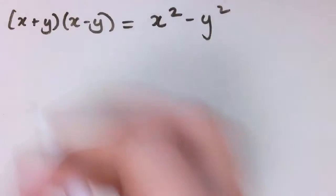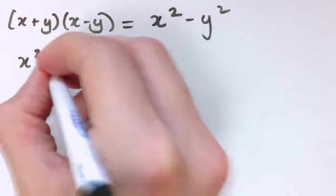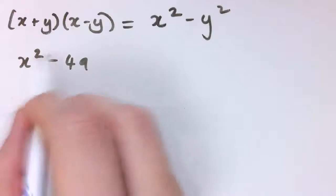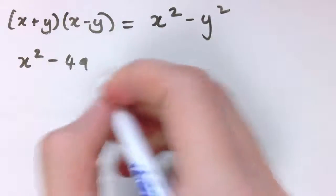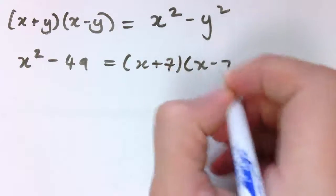We do mainly tend to use it in algebra, though. So if I've got, say, x squared minus 49 and I wanted to factorize that, we could see immediately that if x and y is 7, this gives us x plus 7 times x minus 7.